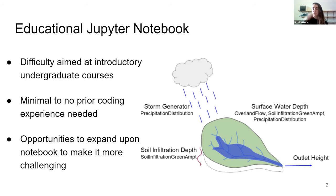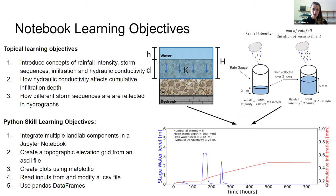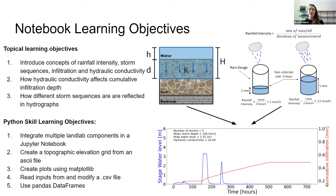The notebook explores how rainfall intensity, storm sequences, and hydraulic conductivity affect hydrographs and cumulative infiltration over a 30-day period. It's aimed at undergraduate introductory-level courses with minimal to no coding experience needed. We wanted to provide a low-risk opportunity to get exposure to coding and Python. There are also assignment questions where students can go back, change the code, and rerun it to expand their Python skills. Learning objectives include concepts of rainfall intensity, storm sequences, hydraulic conductivity, and students can see how three LandLab components are integrated, how to create a topographic elevation grid from an ASCII file, create matplotlib plots, and use CSV data and pandas DataFrames.